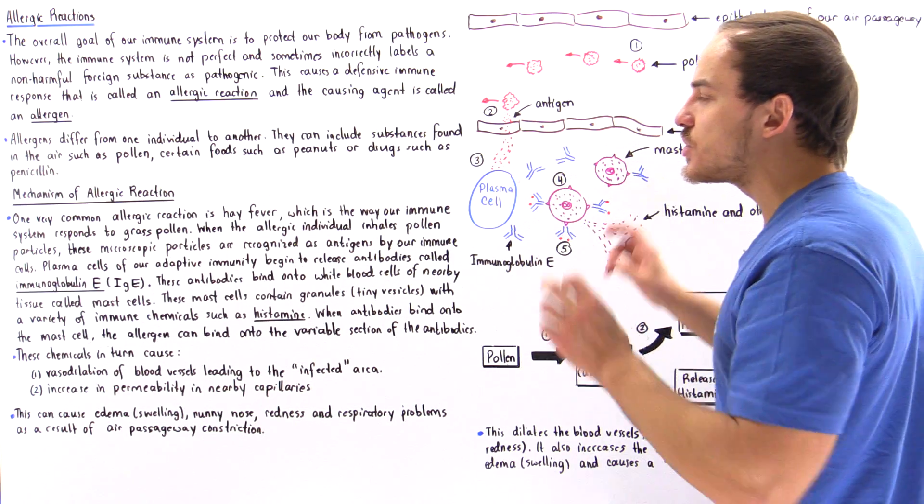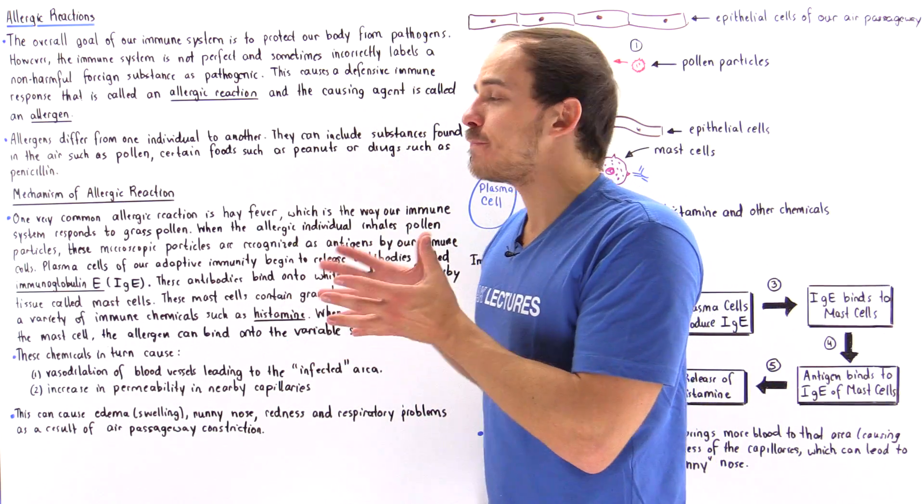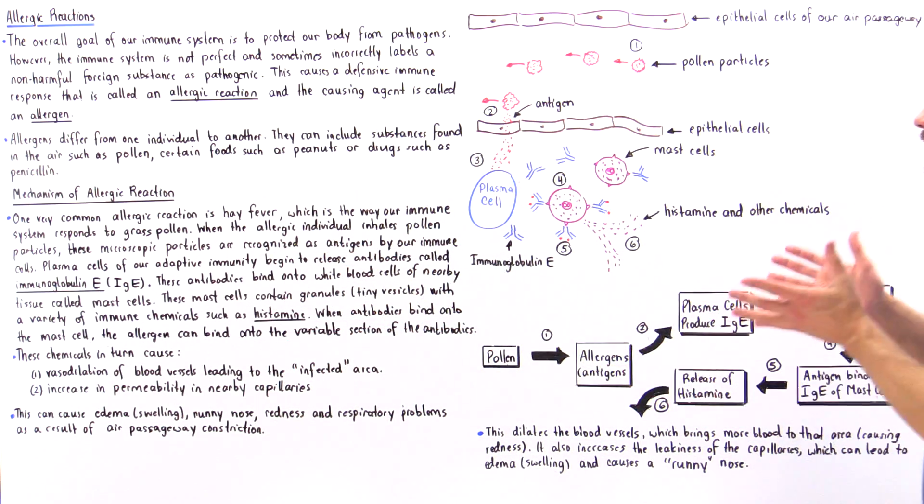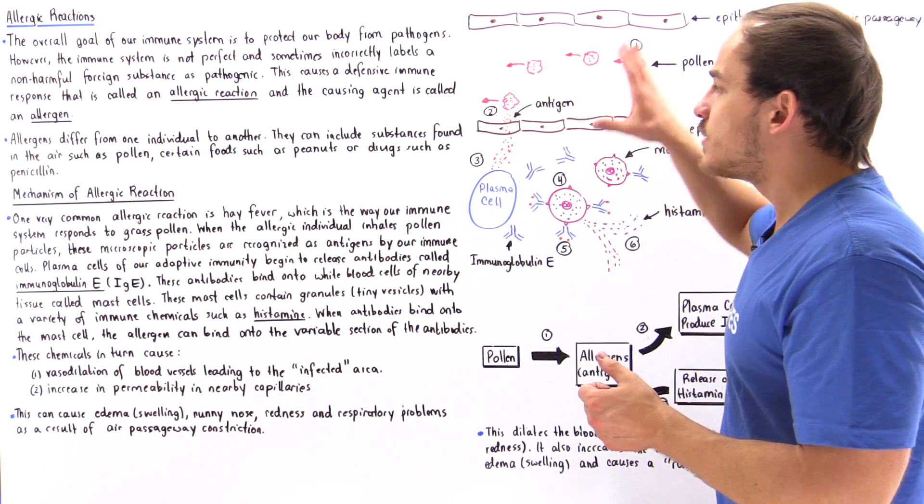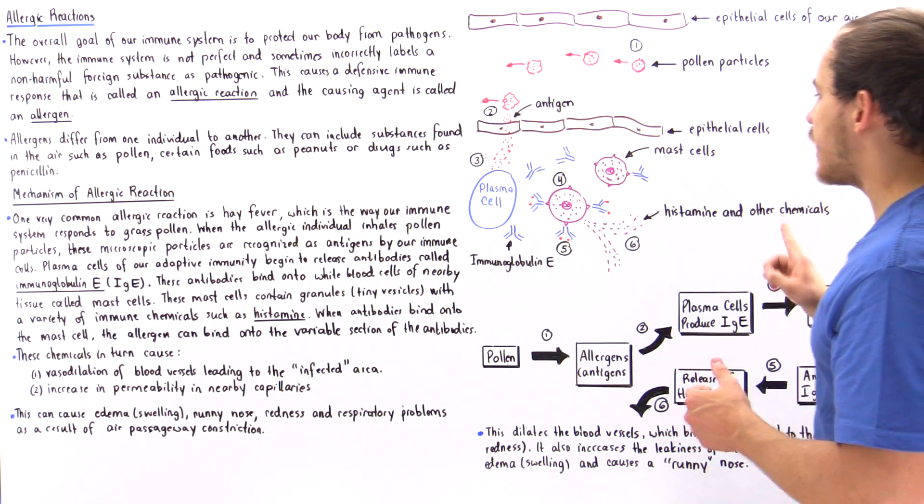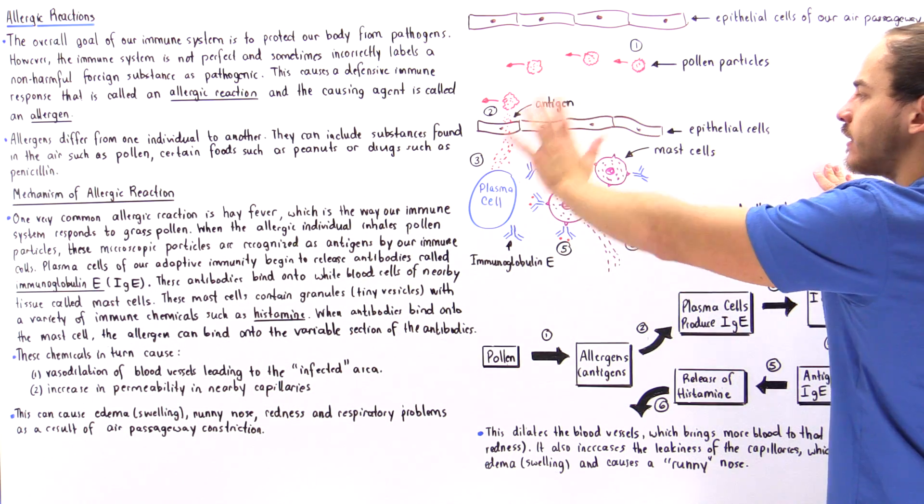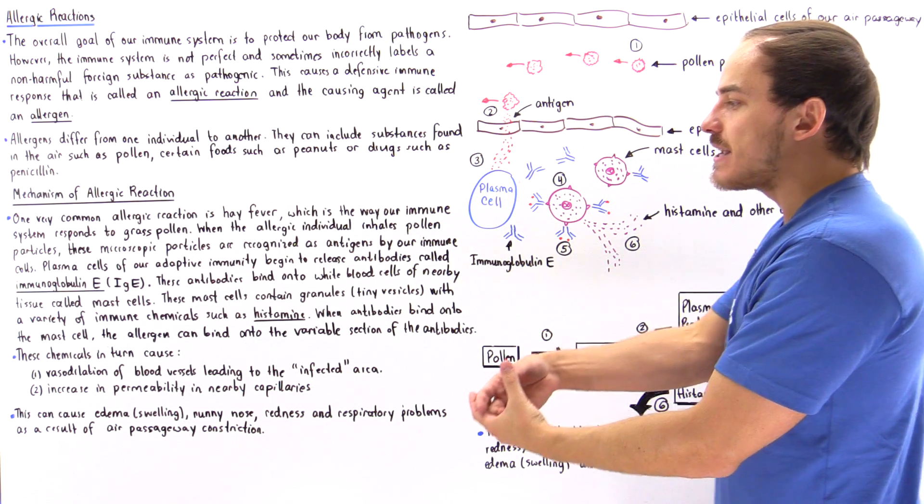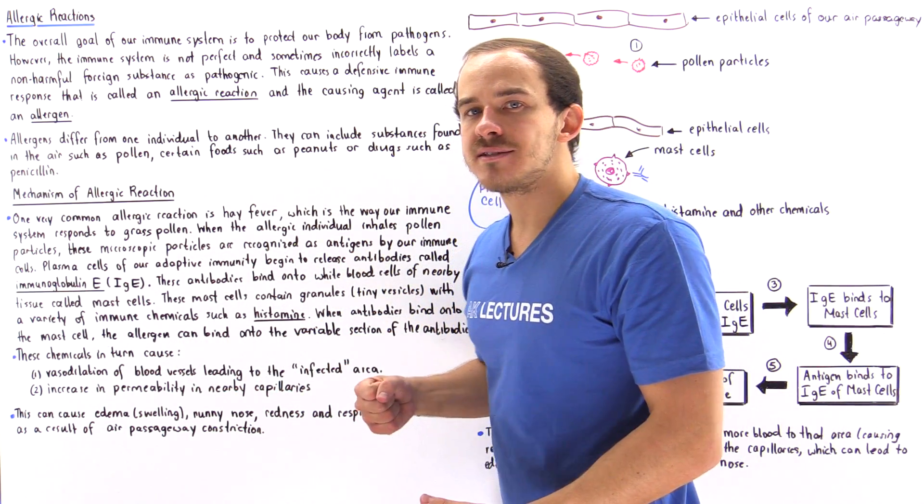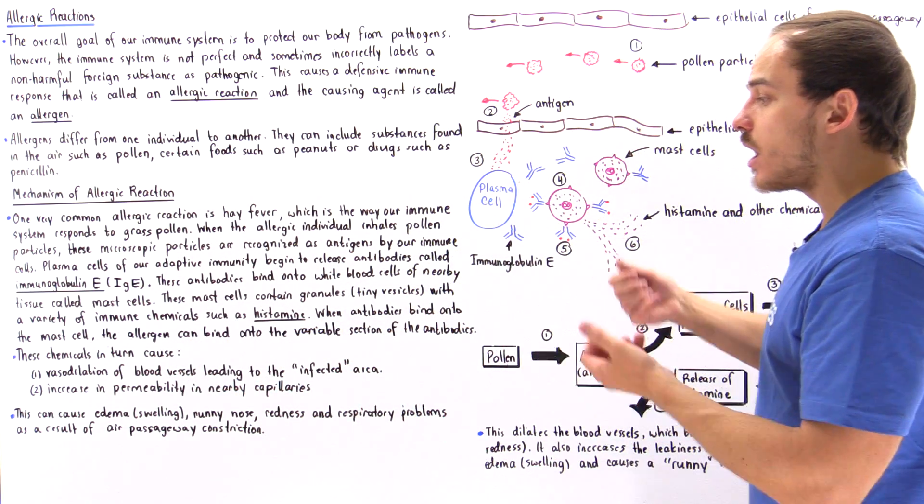We say infected because this otherwise non-harmful foreign substance was labeled as pathogenic by our immune system. So this technically is an infected area to that particular individual because the immune system of that individual treats the pollen antigens as pathogenic.